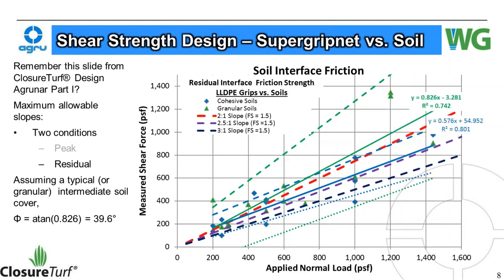To determine the interface friction angle, we refer back to the Part 1 design AgriNAR. We have two conditions — peak and residual — and we'll work with residual strength. This shows soil interface friction of Linear Low Super Grip Net versus soils, both cohesive and granular. Granular soils here are silty sandy clays or clayey sandy silts typically found on intermediate covers. The strength generally follows a linear regression of all data points, giving a slope angle of almost 40 degrees — it's very sticky material.